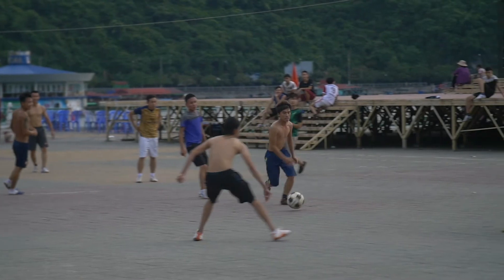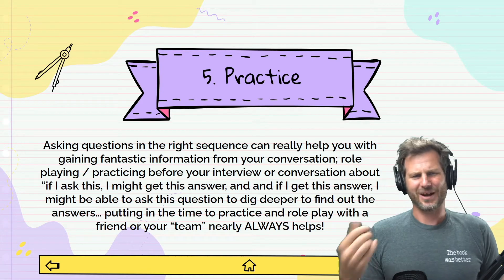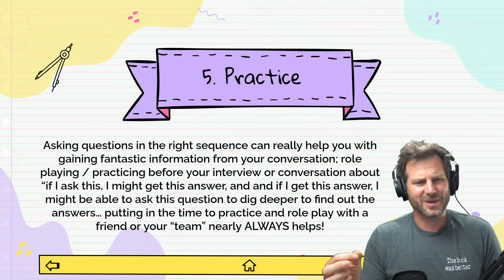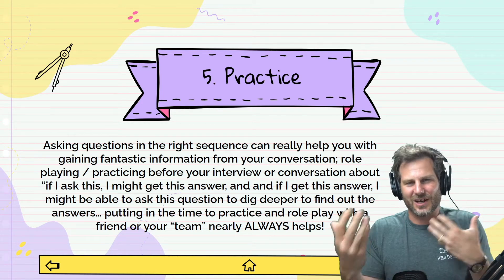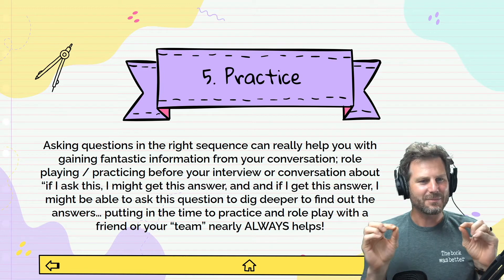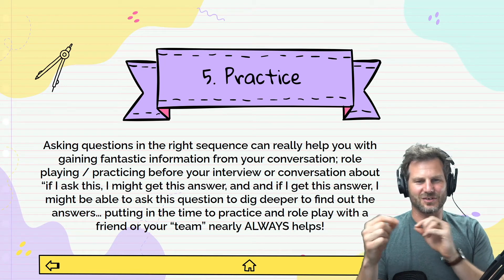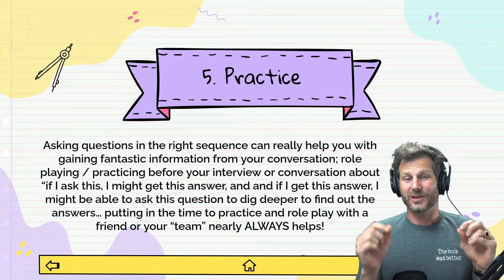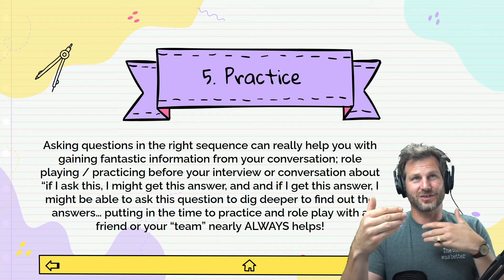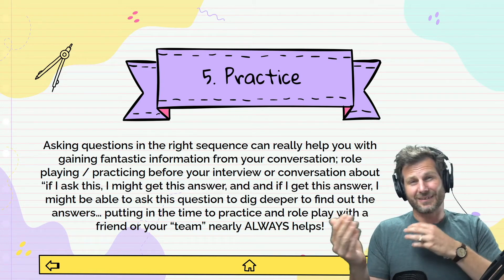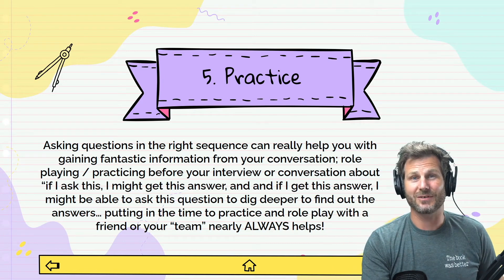Number five: practice. Asking questions in the right sequence can really help you gain fantastic information from your conversation. Role play — pick up the phone, practice with people, practice before your interview or conversation. Think: if I ask this, I might get this answer; if I ask that, I might get that answer. That way you can ask follow-up questions to go deeper. Putting in time to practice and role play with a friend or your team nearly always helps.